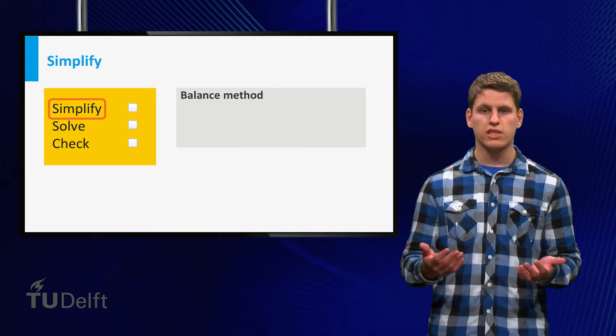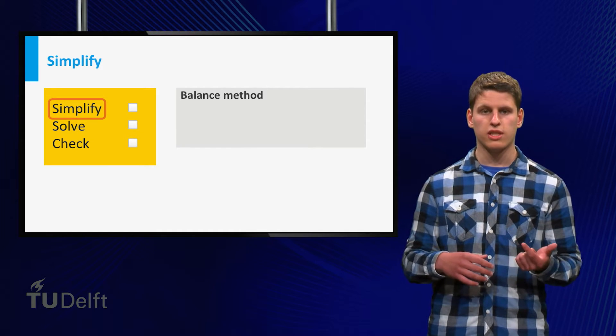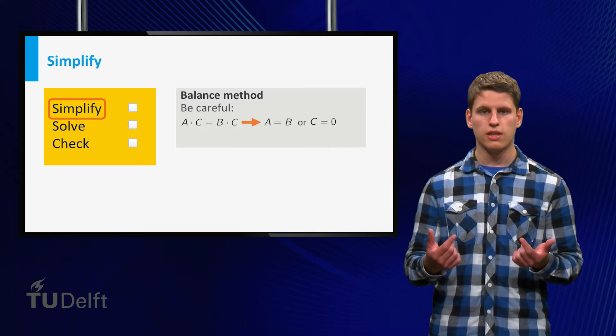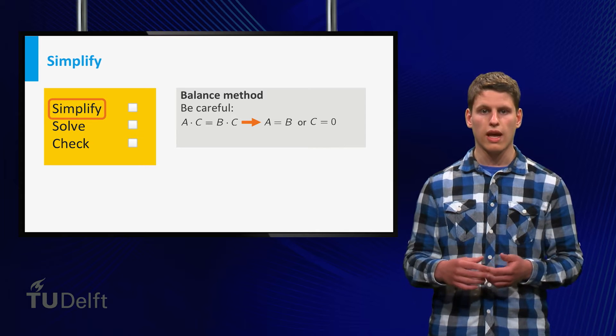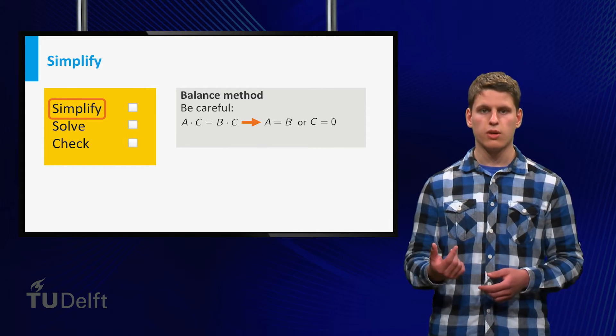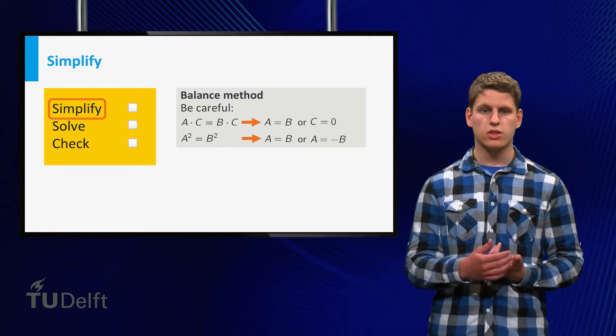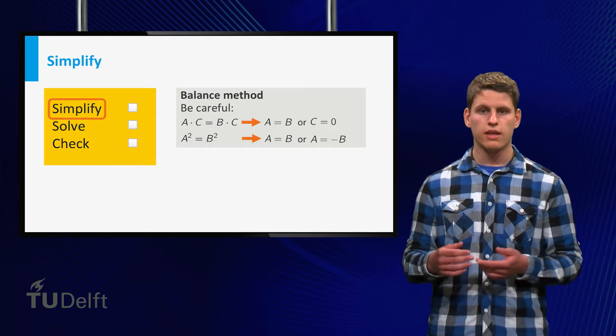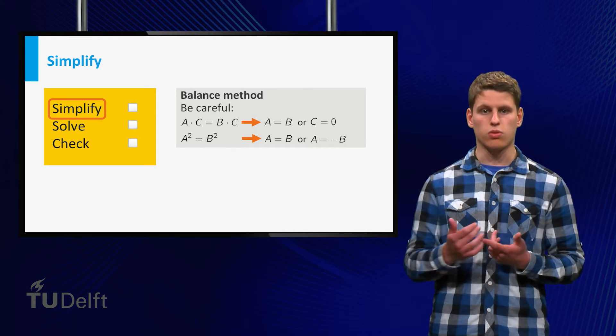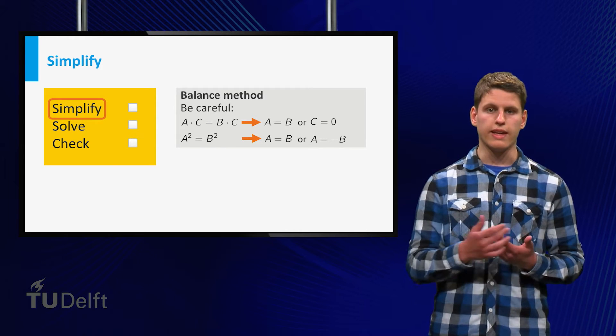If the equation has the form of a times c equals b times c, then this reduces to a equals b, or c equals zero. Equations of the form a squared equals b squared can be reduced to a equals b, or a equals minus b.